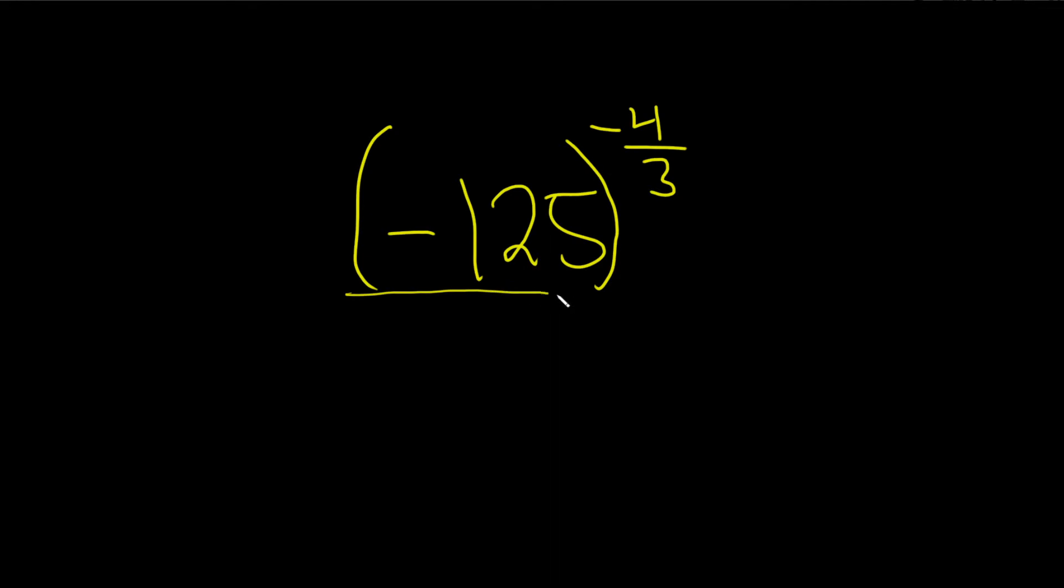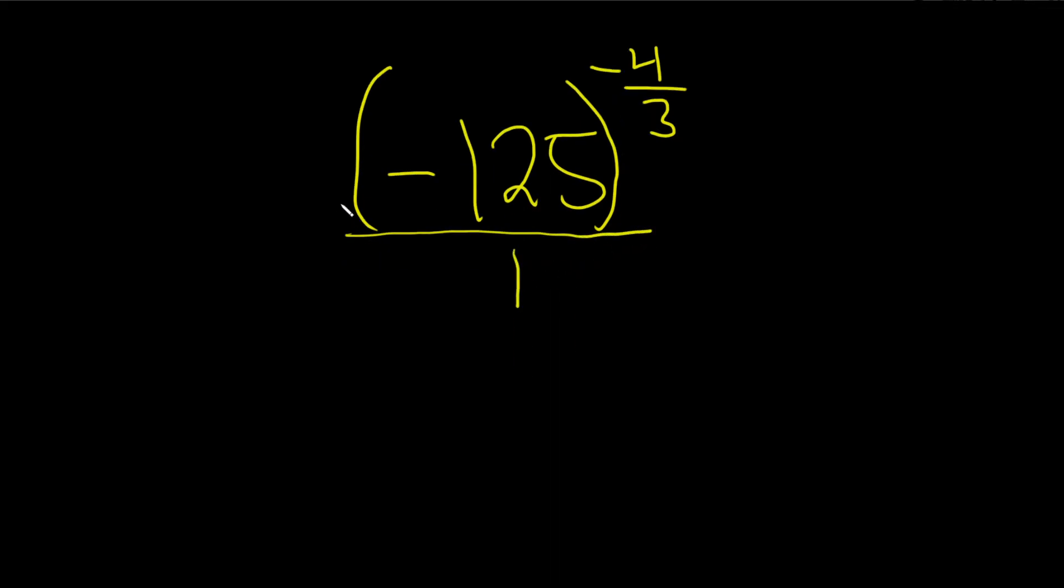We can do that by realizing that this is really all over 1. So what we'll do is we'll bring this whole thing down here, and it'll change the exponent to a positive number. So the negative 125, and then it becomes positive four-thirds like that.